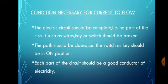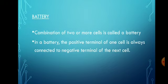Next, we should know what a battery is. A combination of two or more cells is called a battery. We studied cells in Class 6. When two or more cells are combined together they make a battery. In a battery, the positive terminal of one cell is always connected to the negative terminal of the next cell. If you connect positive to positive, electric current will not flow at all.